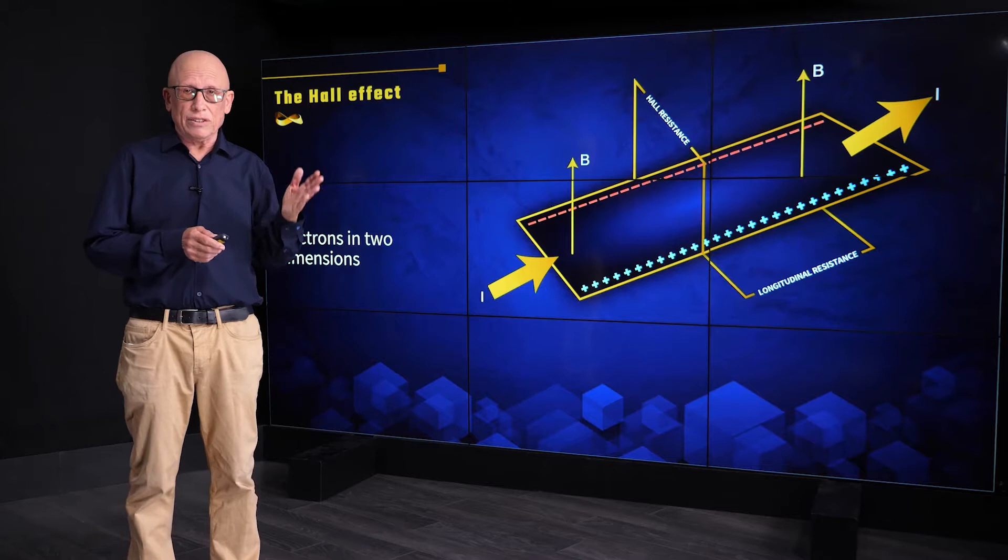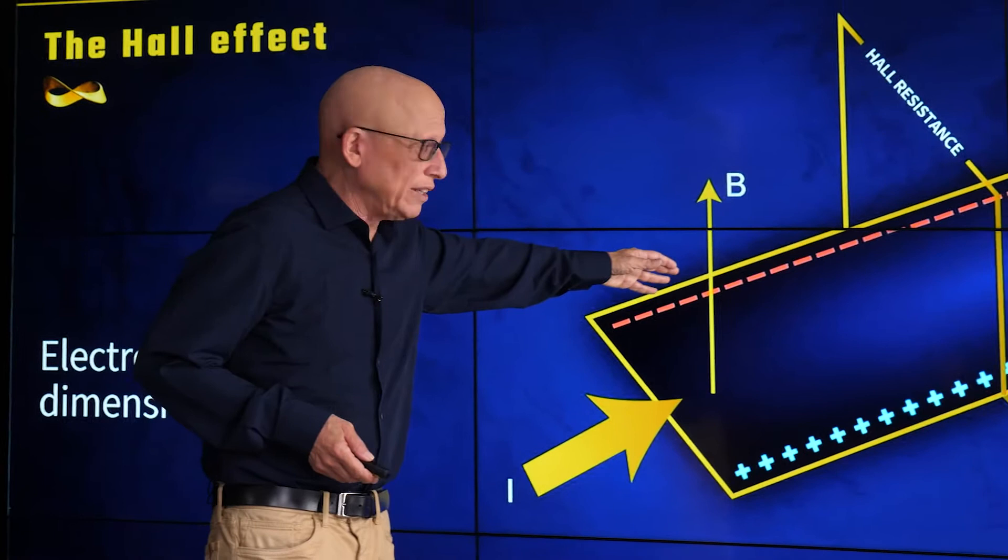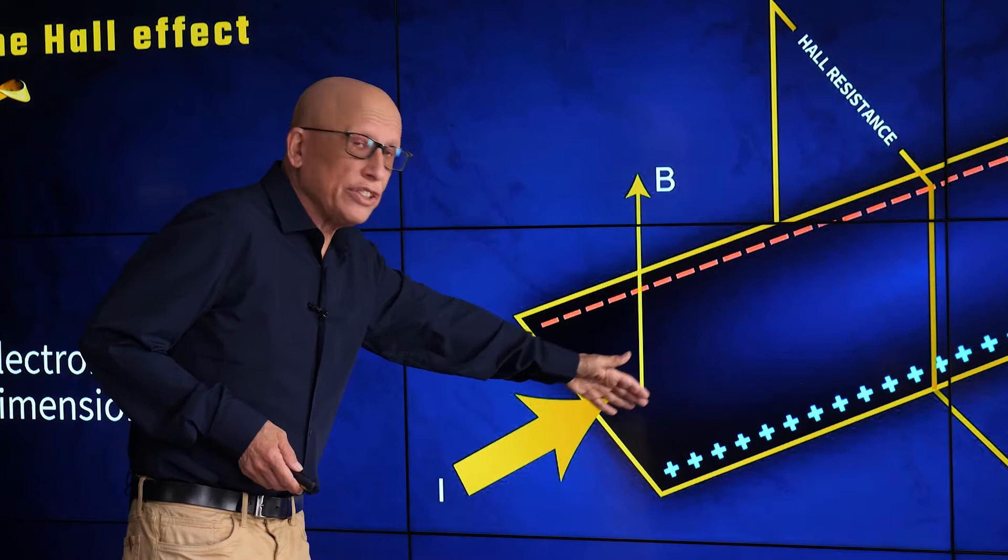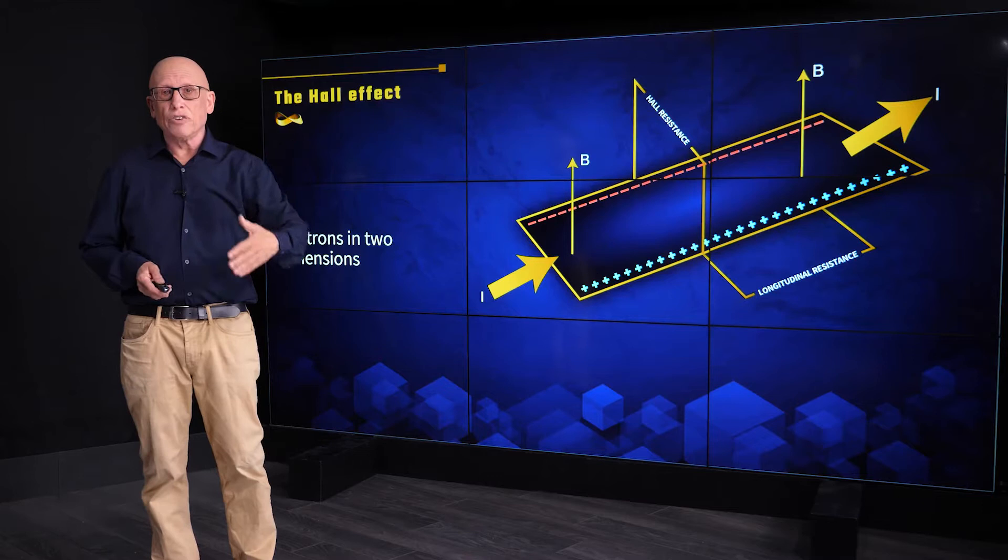The Lorentz force bends the trajectories of the electrons. Therefore, electrons accumulate on one side of the sample and leaving behind positive charges on the other side, creating a Hall voltage - a voltage perpendicular to the flow of the current.